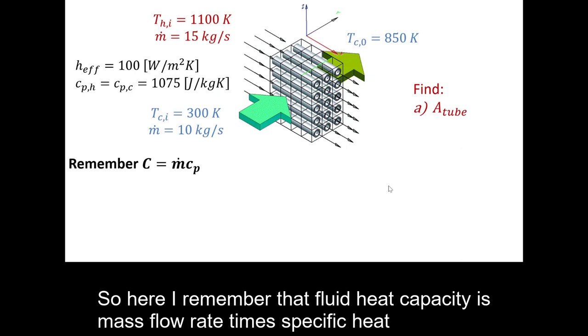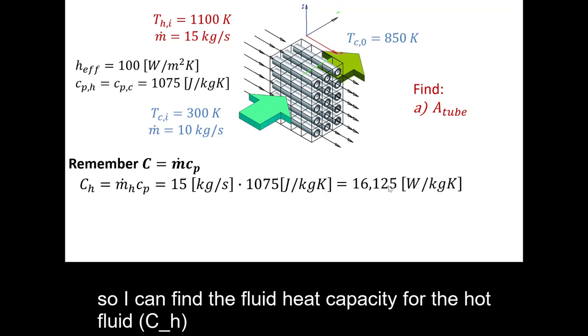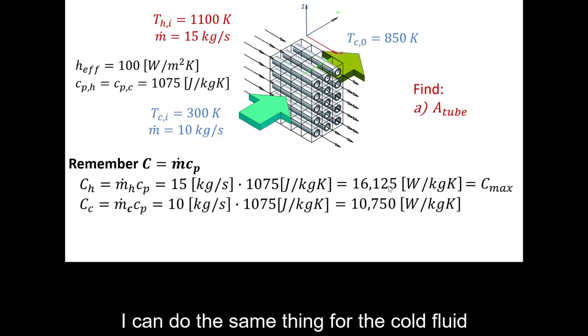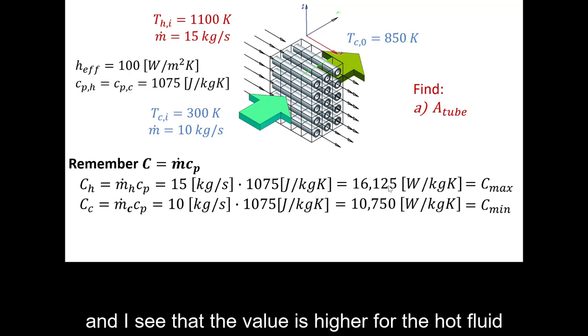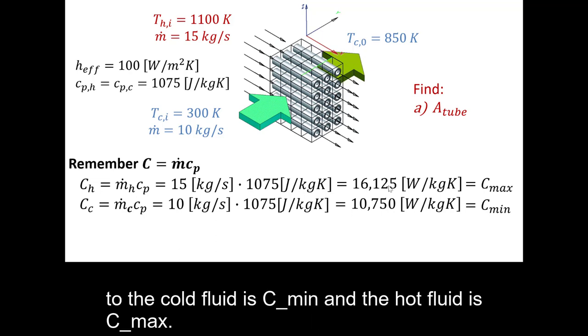So here, I remember that fluid heat capacity is M dot times Cp. For the hot fluid, I know the mass flow rate and the specific heat. So I can find the fluid heat capacity for the hot fluid. I can do the same thing for the cold fluid. And I see that the value is higher for the hot fluid and lower for the cold fluid. So the cold fluid is C min and the hot fluid is C max.